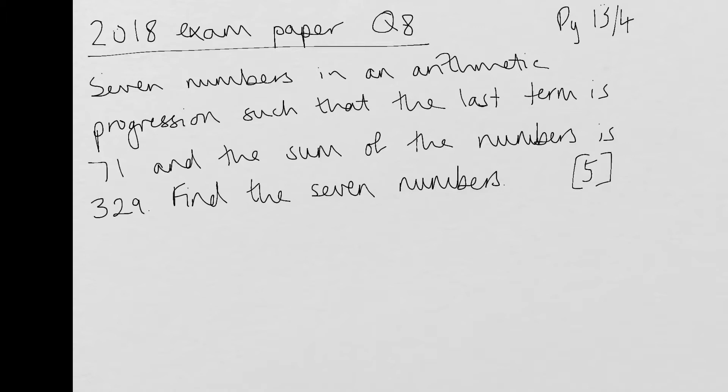So first thing is to notice that it's talking about an arithmetic progression and it has given us the last term and the sum there. So I would begin by going to the sum of an arithmetic progression. And if we have got the last term, then we know the formula that we can use is a shorter version, which is A plus L.